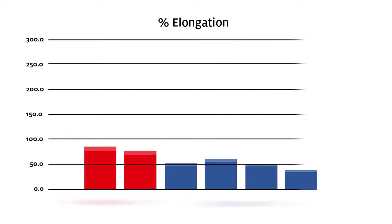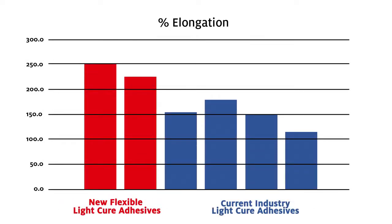Percentage elongation is a measurement commonly used to gauge an adhesive's flexibility or ability to flex and stretch in a bond line.